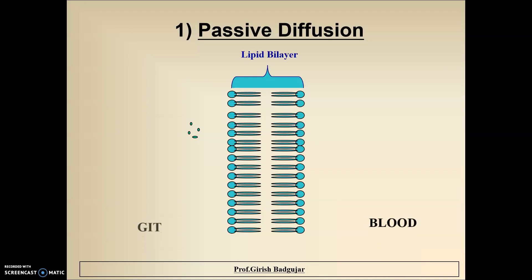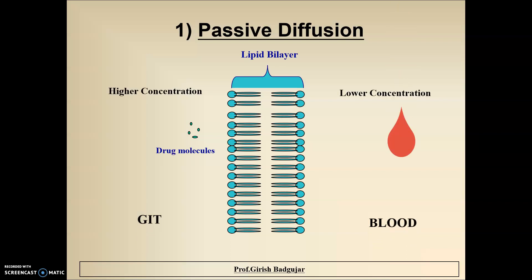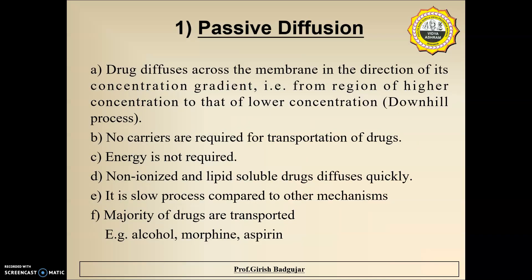First, passive diffusion. Drug molecules are present in higher concentration in the GIT, so these drug molecules are transported from higher concentration to lower concentration — that is, from GIT to blood. Such transport of drug from higher concentration to lower concentration is called passive diffusion. In passive diffusion, the drug diffuses across the membrane in the direction of its concentration gradient, that is from the region of higher concentration to that of lower concentration.